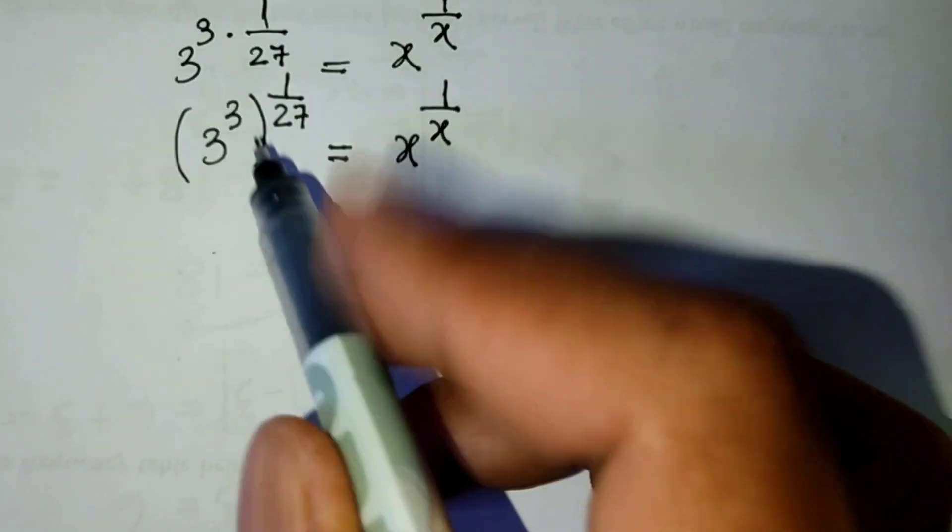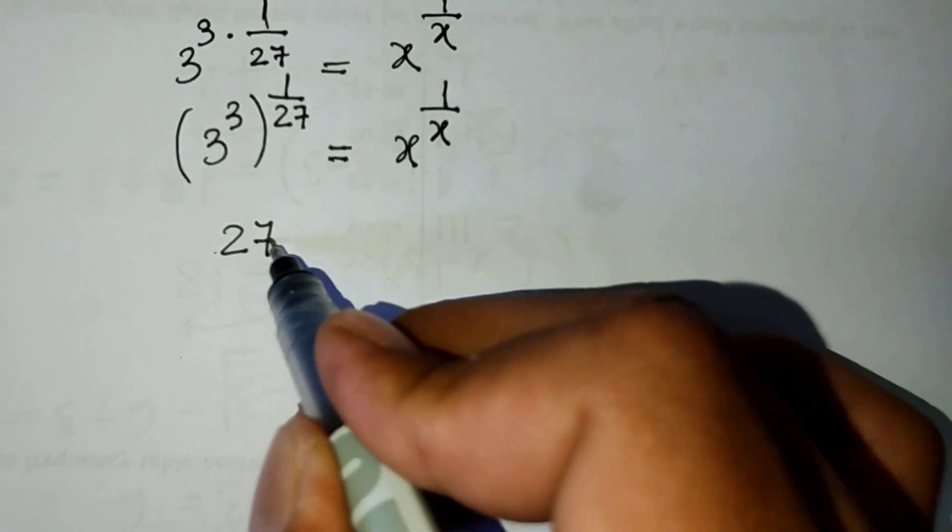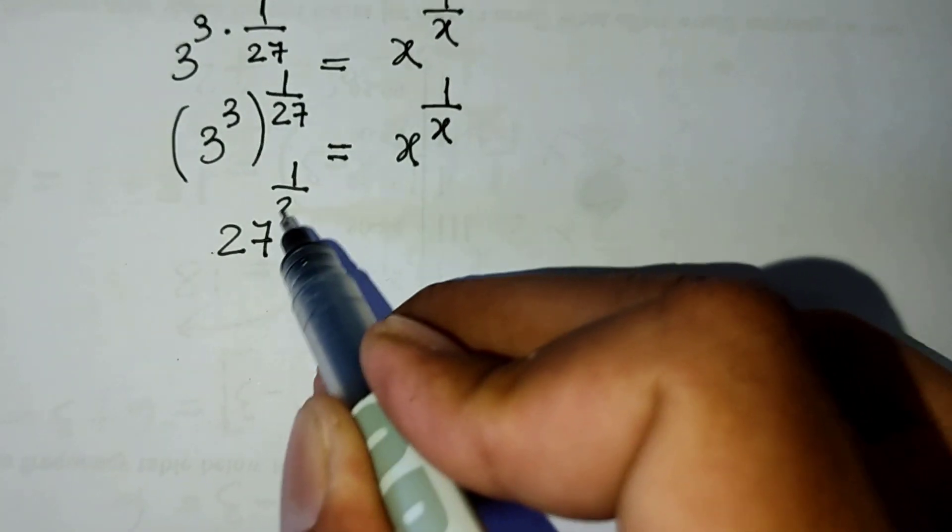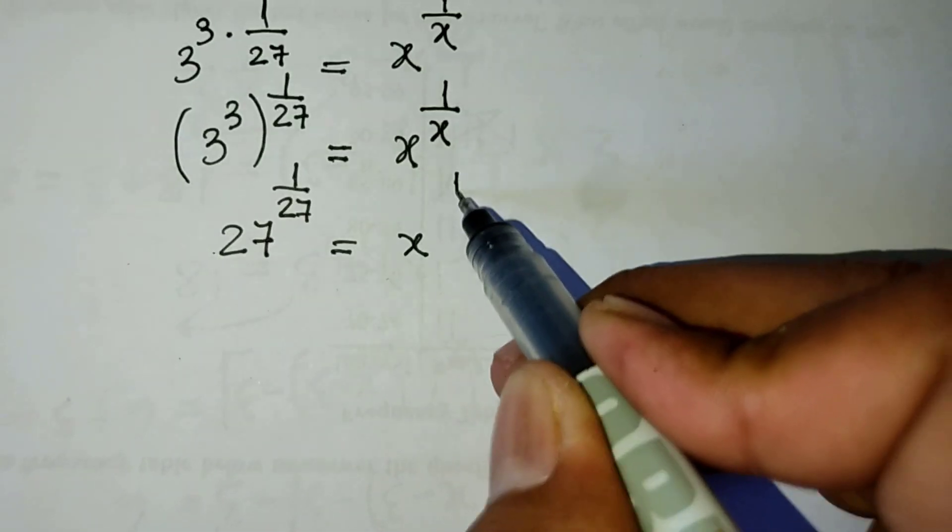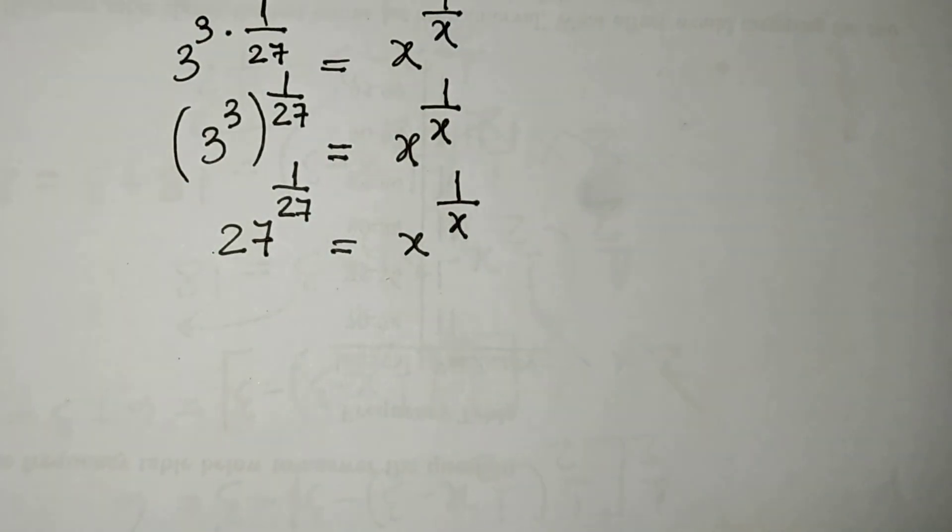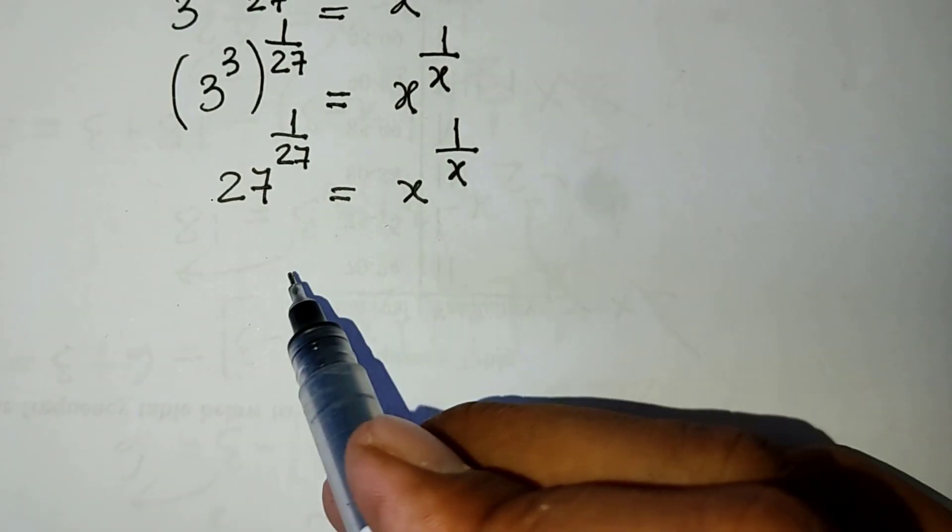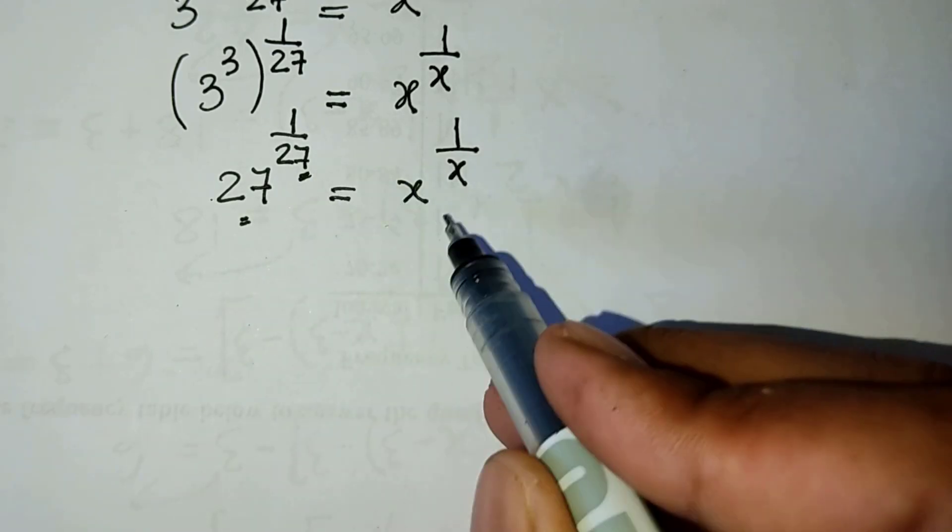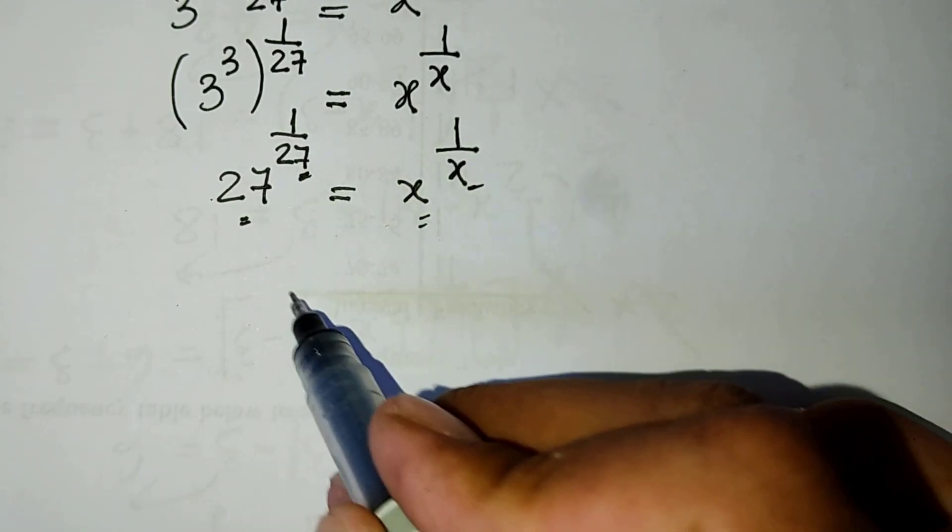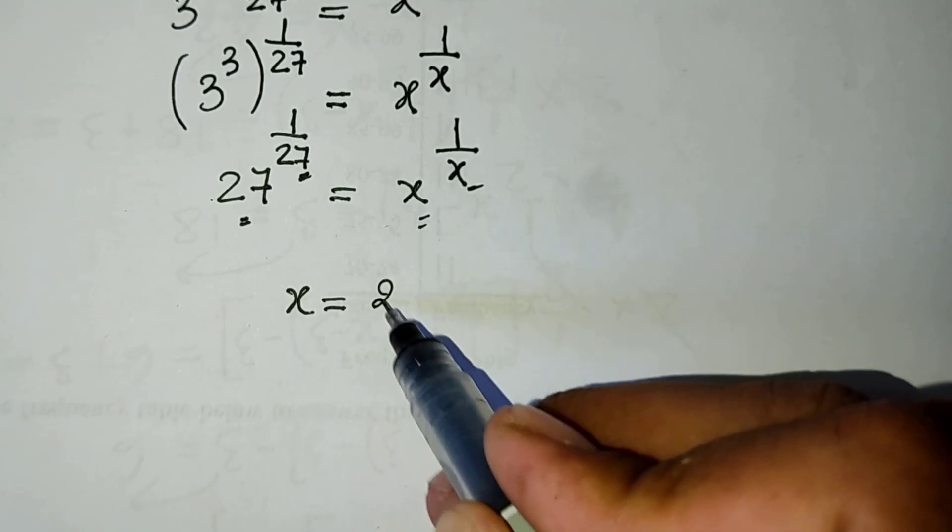Now here is 27 power 1 divided by x. And now we get here is 27, 27 here is x, x. So now here is x equal to 27.